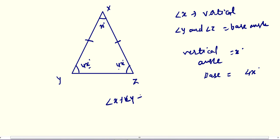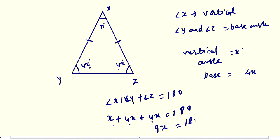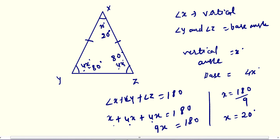Now apply the angle sum property: angle x plus angle y plus angle z equals 180. Substituting: x plus 4x plus 4x equals 180, so 9x equals 180 degrees. Therefore x equals 180 divided by 9, which is 20 degrees. That means the vertical angle is 20 degrees and each base angle is 4 times 20, which equals 80 degrees. So the angles are 80 degrees, 80 degrees, and 20 degrees.